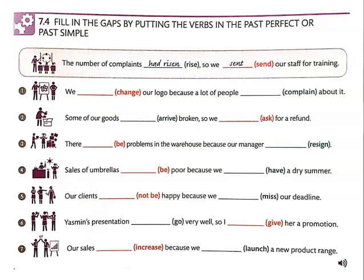Number one: We changed our logo because a lot of people had complained about it. Number two: Some of our goods had arrived broken, so we asked for a refund. Number three: There were problems in the warehouse because our manager had resigned.